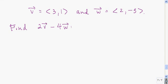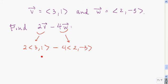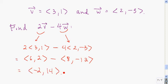Let's end on this example — press pause while you work on it. We want to multiply vector v by 2, vector w by 4, and then subtract those answers. We get the vector 6, 2 minus the vector 8, negative 12, and that is the vector negative 2, positive 14. We have 2 minus negative 12, which is positive 14.